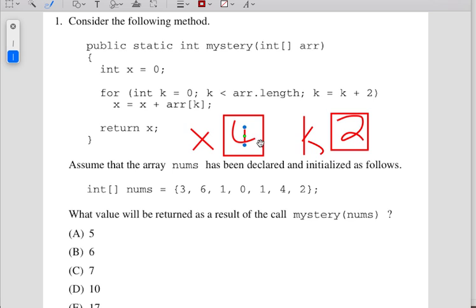Now k is no longer two because we say k plus equals two here. k is also going to be four. And now we go back in the loop. X is four plus array bracket four. Zero, one, two, three, four. Array bracket four looks like it's to be one. So x becomes four plus one, which is five.